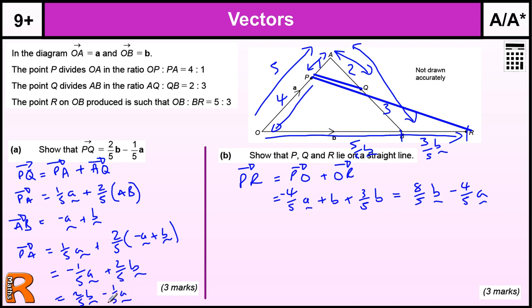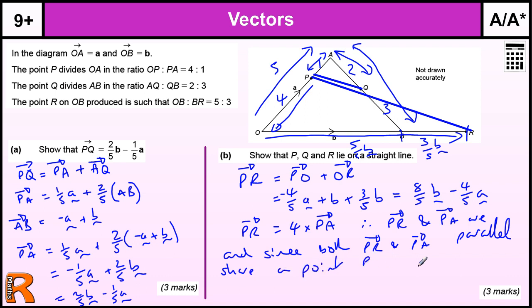So, PR equals 4 times PQ. Therefore, PR and PQ are parallel. And since both PR and PQ share a point, I've got P. They must be collinear or on a straight line.